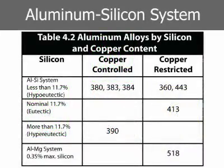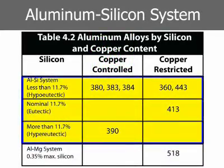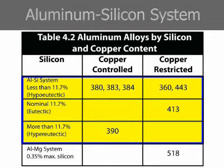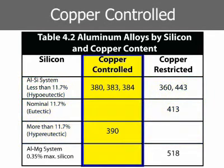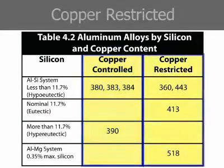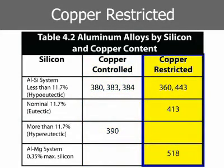Seven of the eight alloys are based on the aluminum-silicon system. The eutectic composition — 11.7% silicon — is a convenient reference point for grouping them. The seven alloys are further grouped as either controlled copper content or restricted copper content.